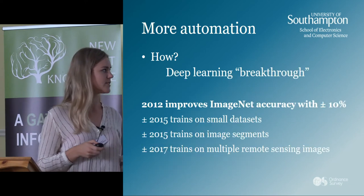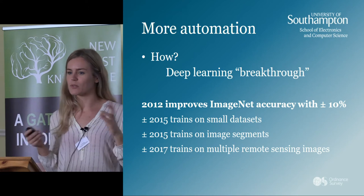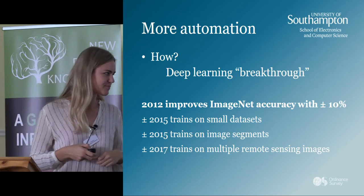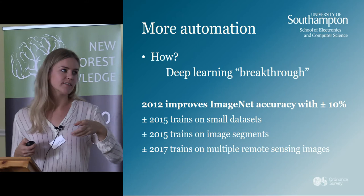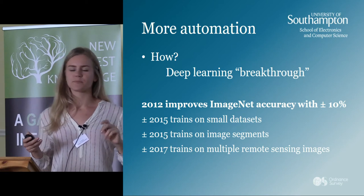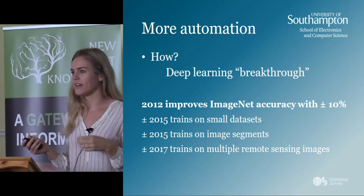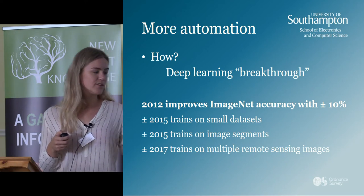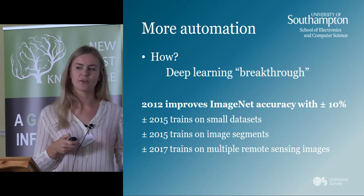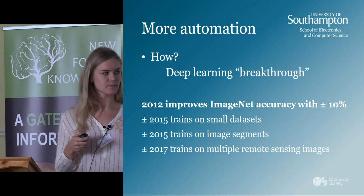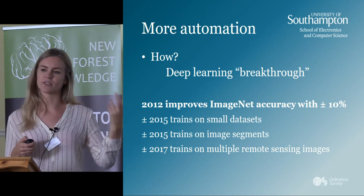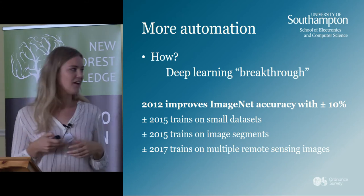Before 2012, deep learning wasn't really used in archaeology much. But then there was a deep learning breakthrough in computer science. In 2012, a paper was presented that improved ImageNet accuracy by 10%. ImageNet is a really big dataset used to classify images. What they used was neural networks, which have been around since the 1960s — the theory was there but never successful enough. Then in 2012, the depth of these networks was increased along with increasing computer power to make it possible.